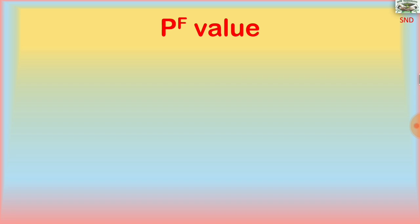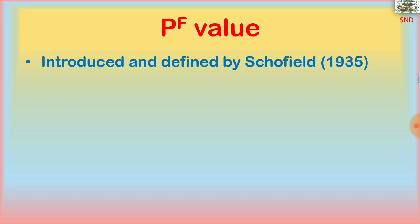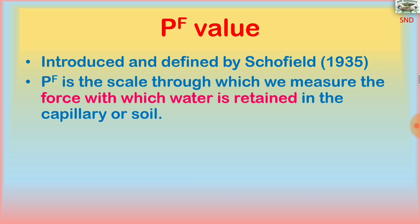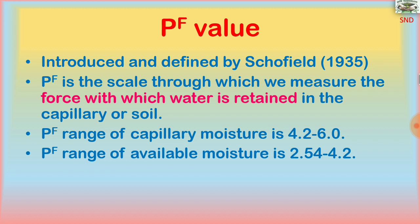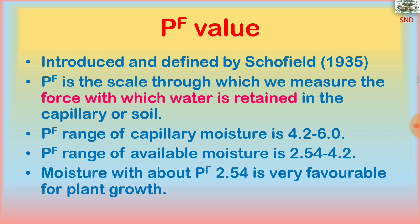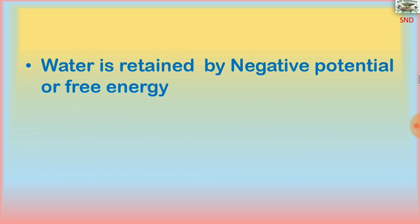The first concept is PF value, introduced and defined by Schofield in 1935. PF is the scale through which we measure the force with which water is retained in the capillary or soil. The PF range of capillary moisture is 4.2 to 6.0, and the PF range of available moisture is 2.54 to 4.2. Moisture with about PF 2.54 is very favorable for plant growth.